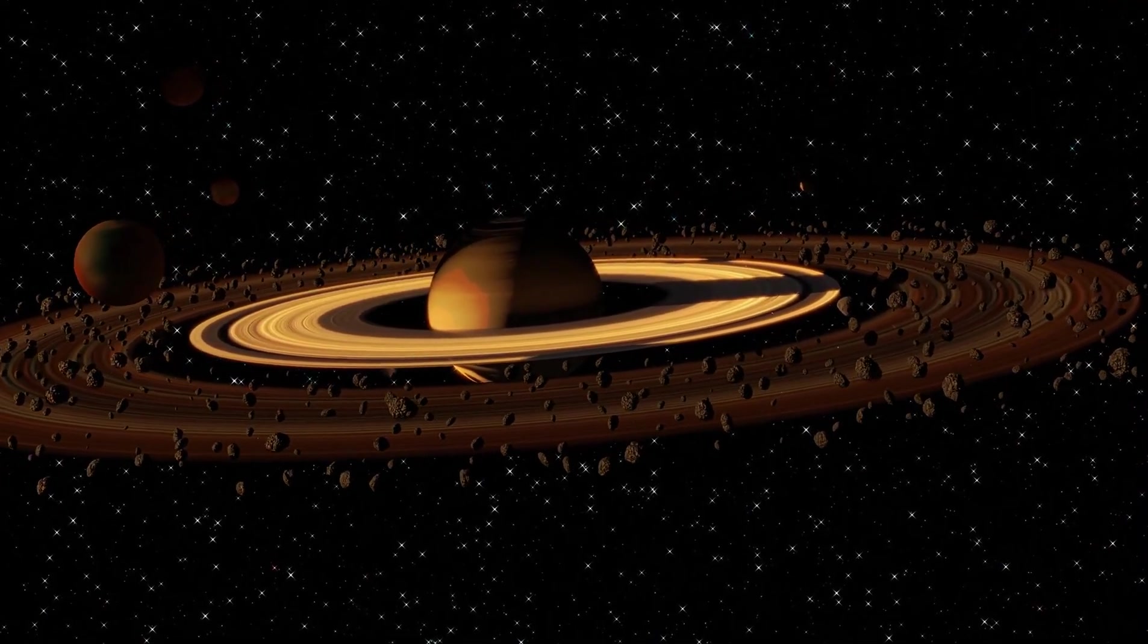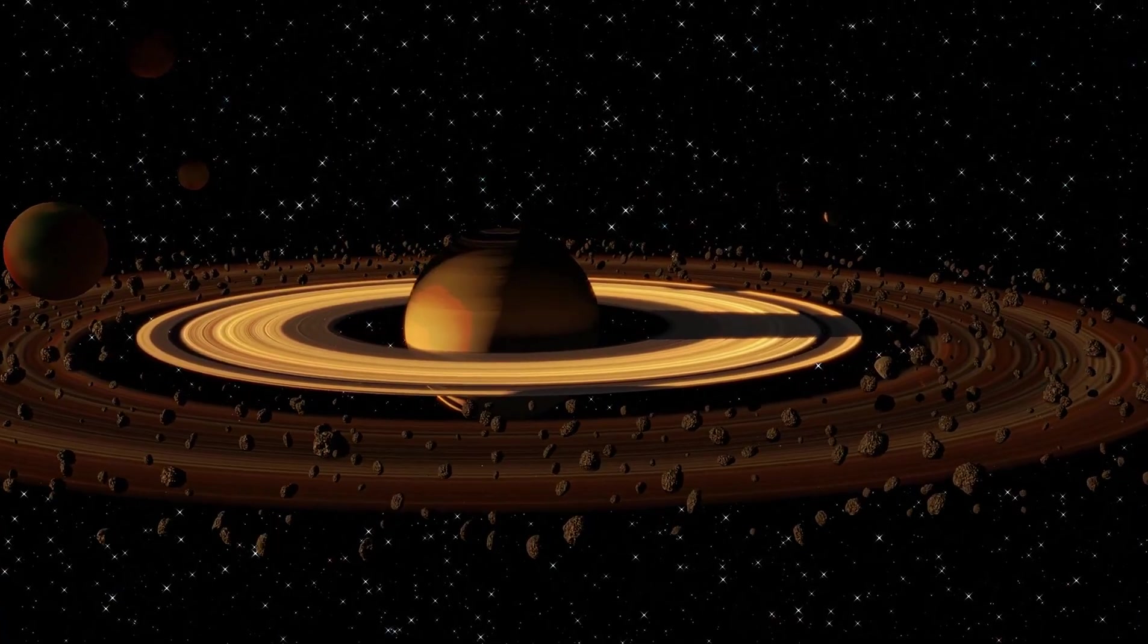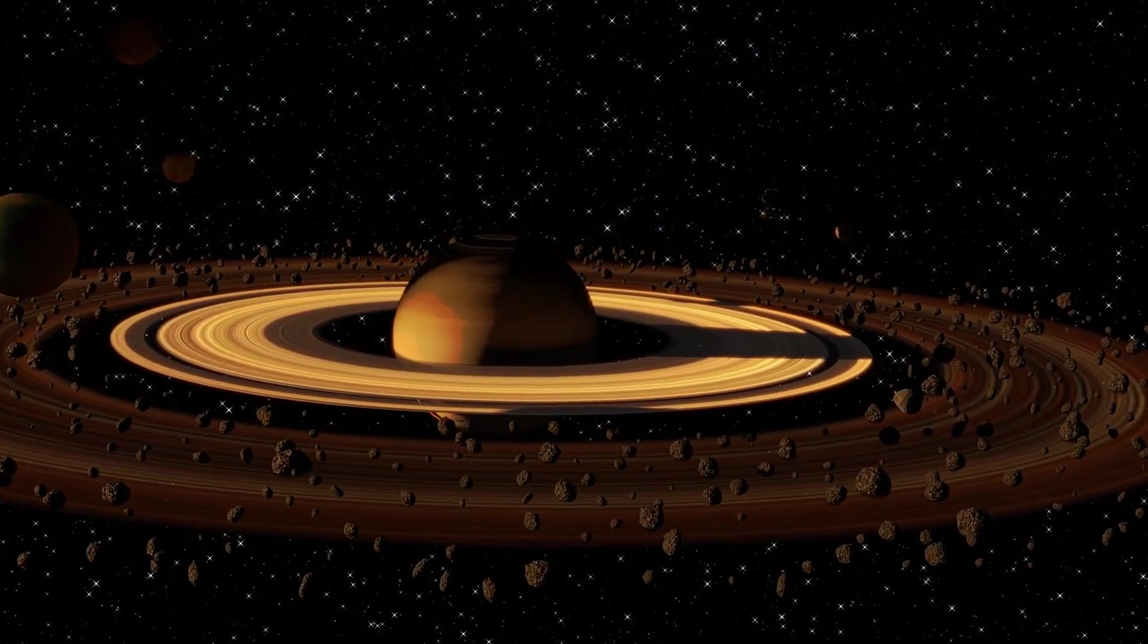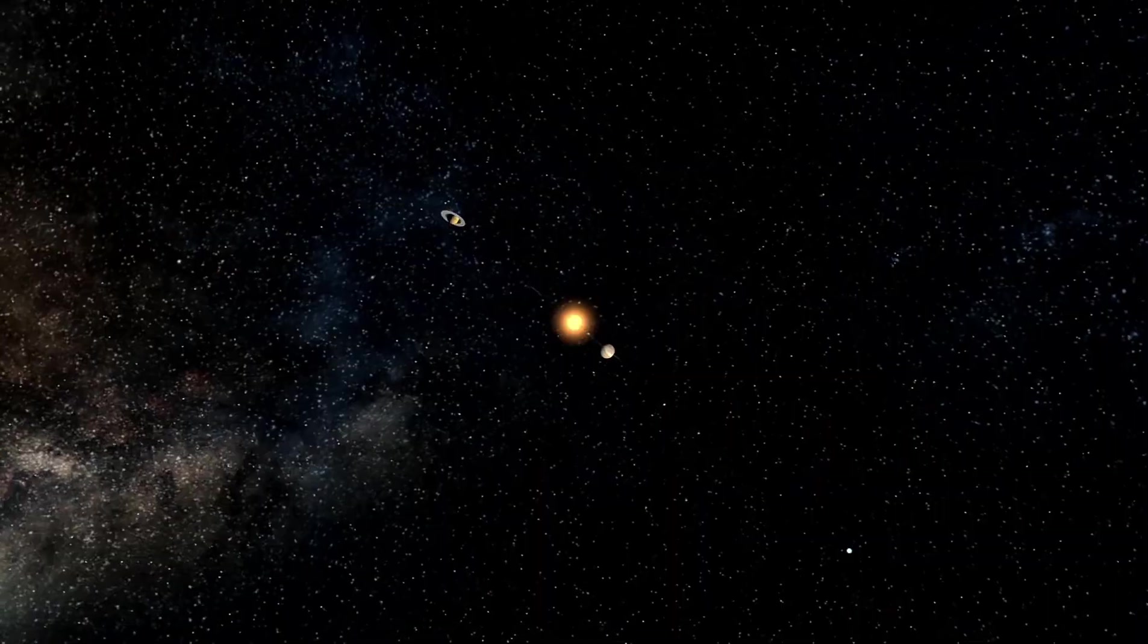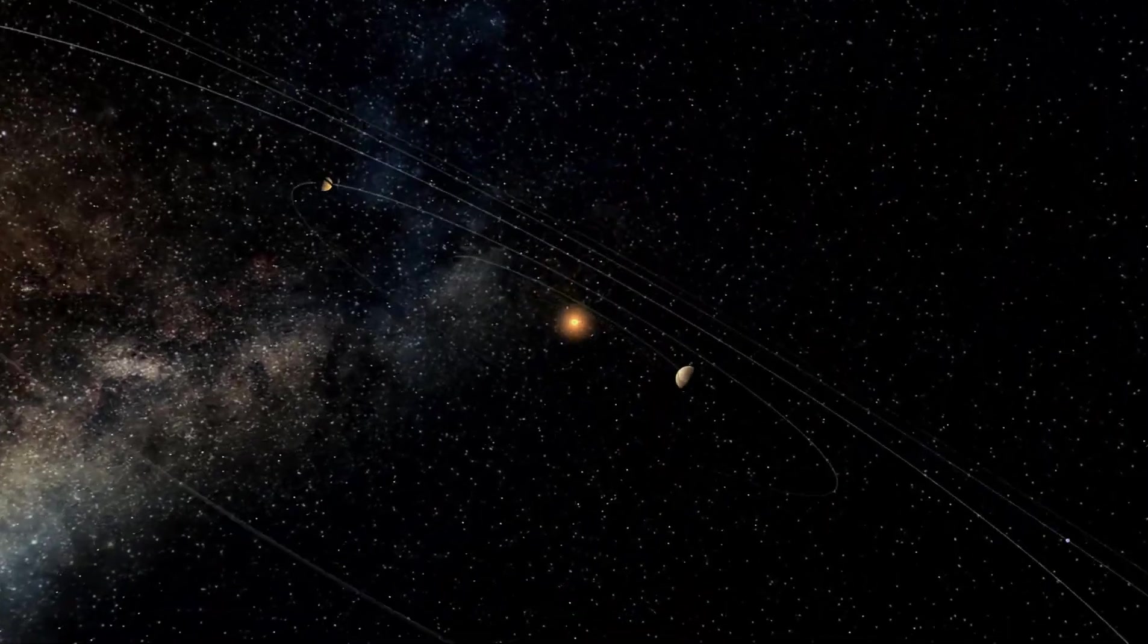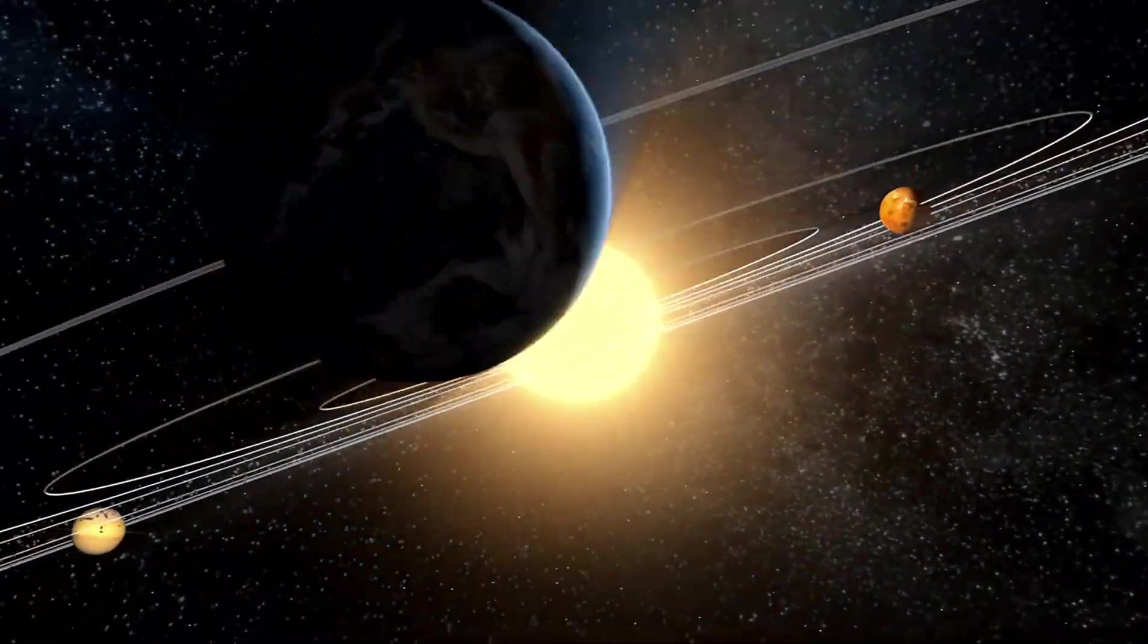Here's the part NASA doesn't sugarcoat. Even with Webb, we're still not seeing the full universe. We can only observe light that has had time to reach us. But the universe is expanding, fast. There are galaxies whose light will never reach Earth—galaxies permanently out of view, hidden beyond the cosmic horizon.